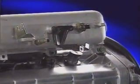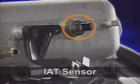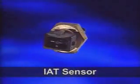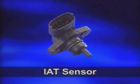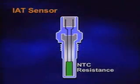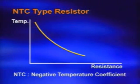The intake air temperature sensor can be integrated with the MAP sensor or mass air flow sensor. Despite the types, their operation principle and checking procedures are done the same. This sensor is a negative temperature coefficient (NTC) resistance, which means that the component's resistance will reduce as the temperature increases.